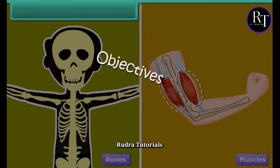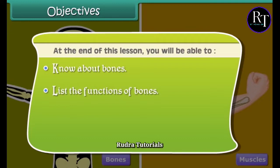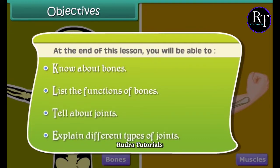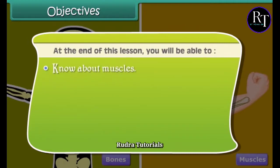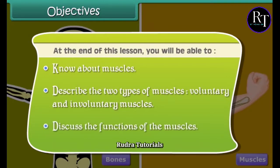Objectives. At the end of this lesson, you will be able to: know about bones, list the functions of bones, tell about joints, explain different types of joints, know about muscles, describe the two types of muscles — voluntary and involuntary muscles — and discuss the functions of the muscles.